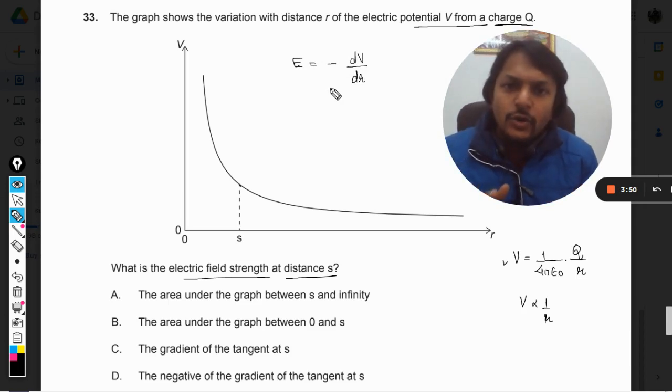Now what is dV by dr? V is on the y-axis and r is on x-axis. It means dV by dr is the slope of the graph, slope of the curve at any point.